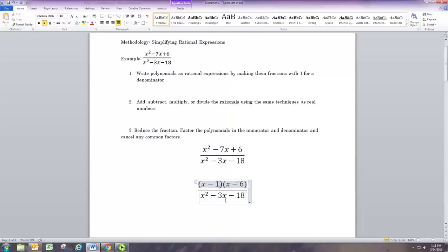At the bottom, we need the same idea. The leading coefficient is 1, so we can just look for two numbers that multiply to negative 18 and add up to negative 3. And those numbers are negative 6 and positive 3. Negative 6 plus 3 is negative 3. Negative 6 times 3 is negative 18.